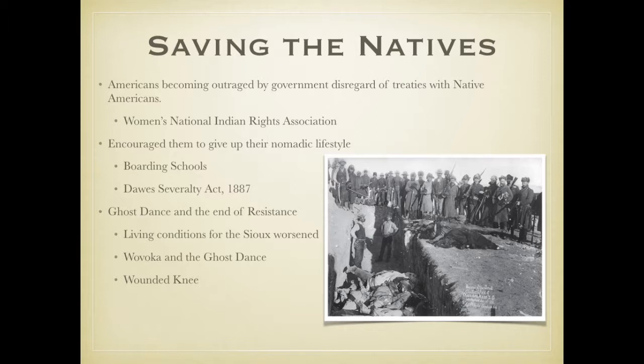The Ghost Dance spread among the Sioux and alarmed officials. Police were dispatched to arrest Sitting Bull; when he was pulled from his cabin shots were fired and he was mortally wounded. On December 29th, cavalry rounding up starving and freezing Sioux near Wounded Knee heard a shot from an unknown source. Soldiers responded with cannon fire and within minutes hundreds of natives lay dead on the ground. This basically marks the end of a generation's worth of conflict, as the spirit of these Native tribes was broken. The picture on the slide shows the aftermath — the cleanup at Wounded Knee following the massacre.